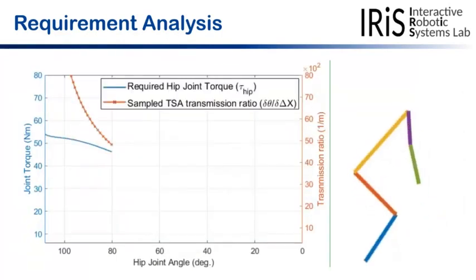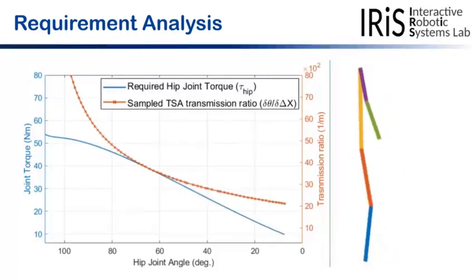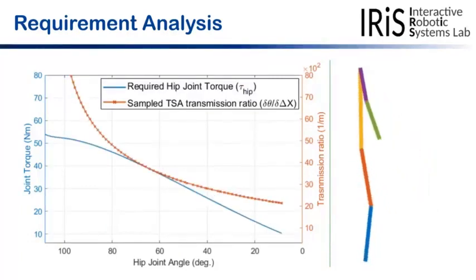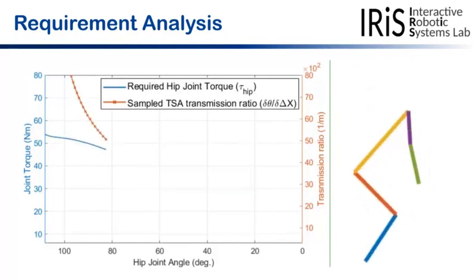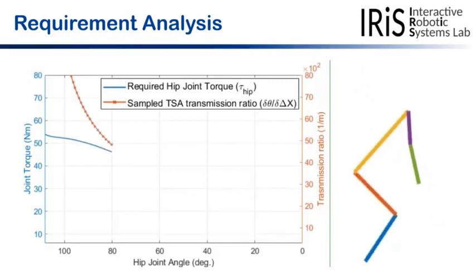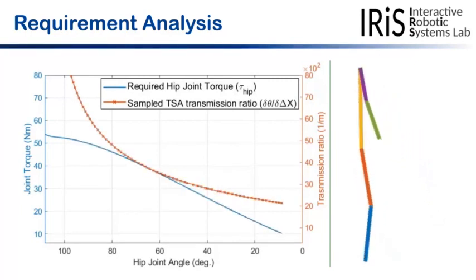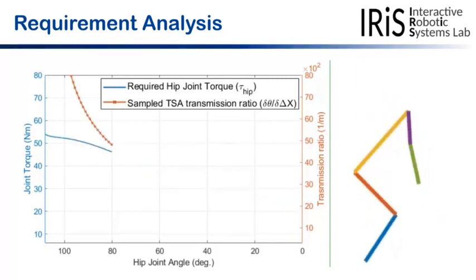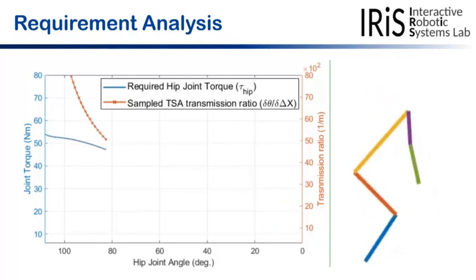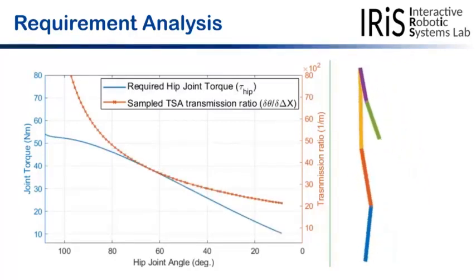At the beginning of the motion, a completely large torque is required then its values gradually decrease during the motion. Fortunately, this torque profile closely matches with the tendency of TSA transmission ratio which is initially high for untwisted string and then dropped with the twisting. This observation is one of the key motivations of this research.